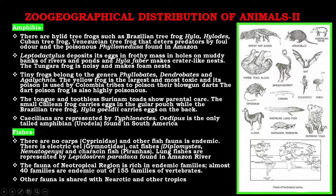For fishes, there are no carps of family Cyprinidae; other fish fauna is endemic. There is the electric eel belonging to family Gymnotidae, catfishes Diplomystes and Nematogenys, and the kerosene fish, piranhas. Lungfishes are represented by Lepidosiren paradoxa found in the Amazon river. The fauna of the Neotropical region is rich in endemic families — almost 40 families are endemic out of 155 families of vertebrates. Other fauna is shared with the Nearctic and other tropics.